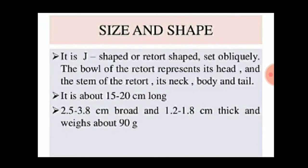The pancreas is J-shaped or retort-shaped, set obliquely. The bowl of the retort represents its head, and the stem of the retort its neck, body, and tail. It is about 15 to 20 centimeters long, 2.5 to 3.8 centimeters broad, and 1.2 to 1.8 centimeters thick, and weighs about 90 grams.